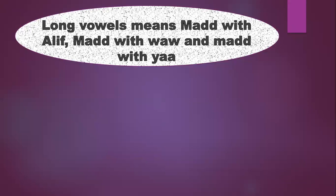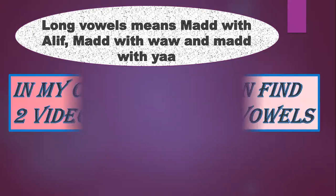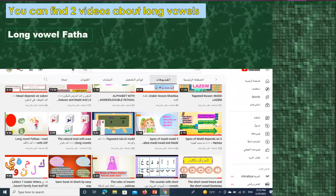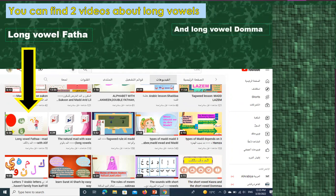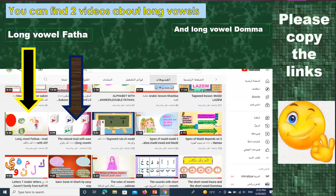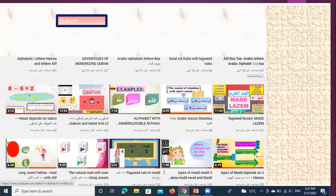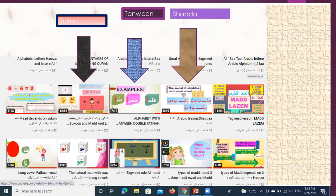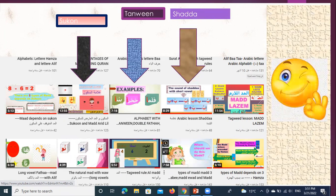Long vowels means mad with aleph, mad with waw, and mad with ya. In my channel you can find two videos about long vowels. The first: long vowel fatha — mad with aleph. The second video: long vowel dhamma — the natural mad with waw. Please copy the links. Vowels also include sukun, tanwin (double fatha, double dhamma, and double kasra), and shadda — three more videos. Don't forget to copy the links.